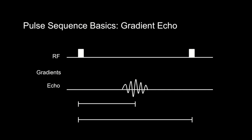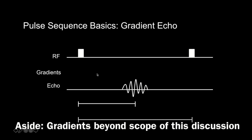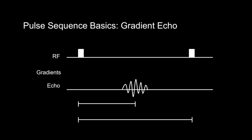A gradient echo pulse sequence is one of the simplest pulse sequences. It starts with a single RF pulse — for example, a 90-degree RF pulse, but it can be lower. Magnetic field gradients are then applied. Gradients result in a varying magnetic field in space in a particular direction — essentially a gradient in magnetic field in a direction, which is why they're called gradients.